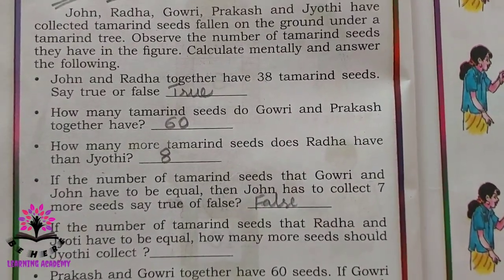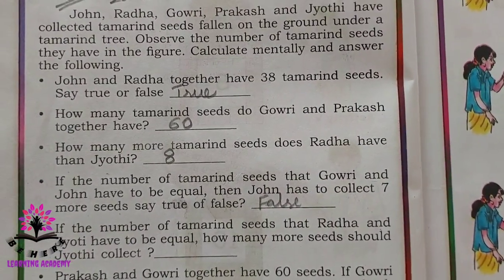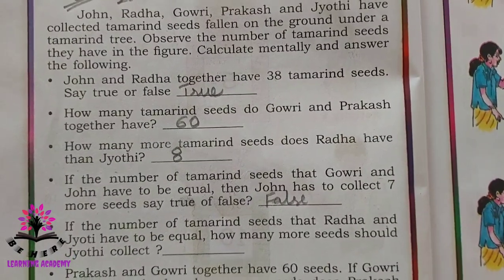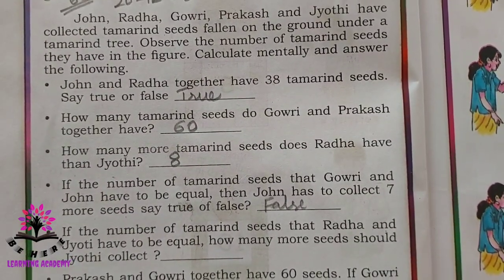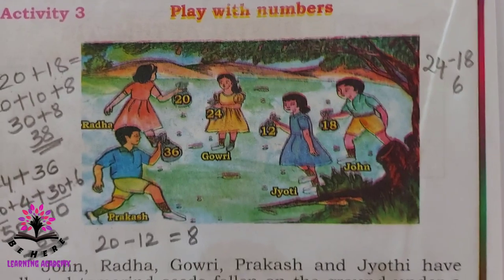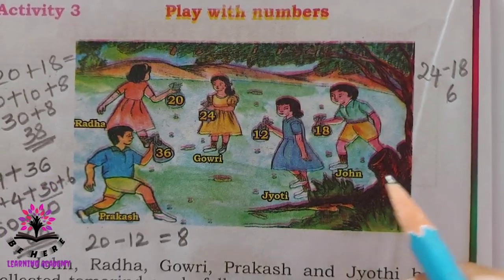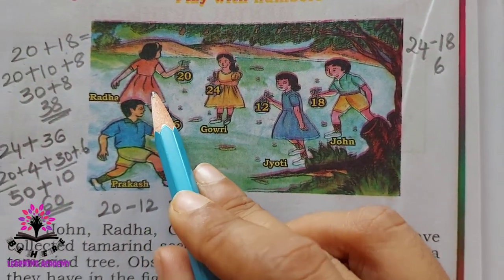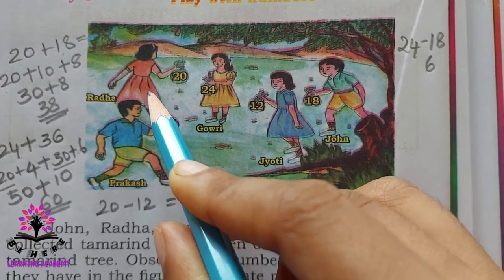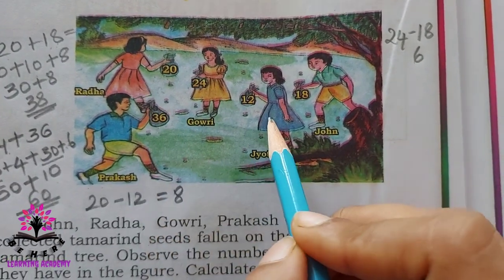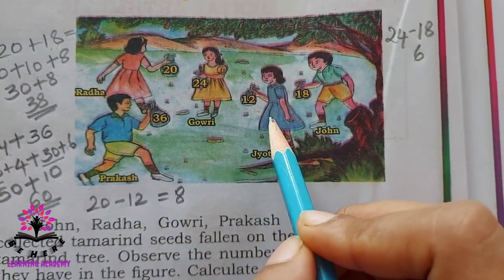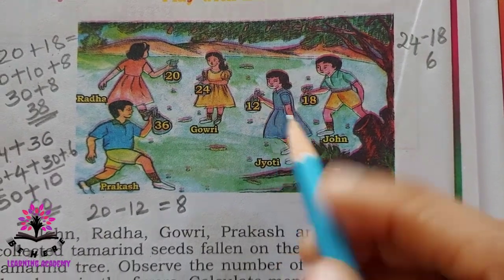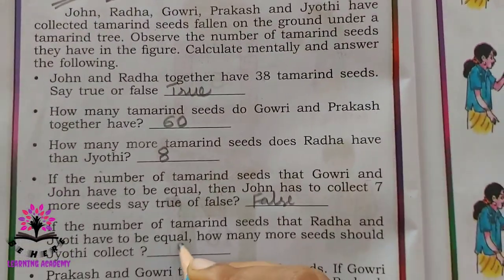The next question: if the number of tamarind seeds that Radha and Jyoti have to be equal, how many more seeds should Jyoti collect? Radha has 20 and Jyoti has 12, so how many more does she need? She needs 8 more seeds.